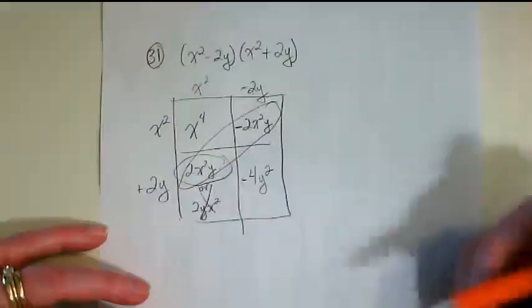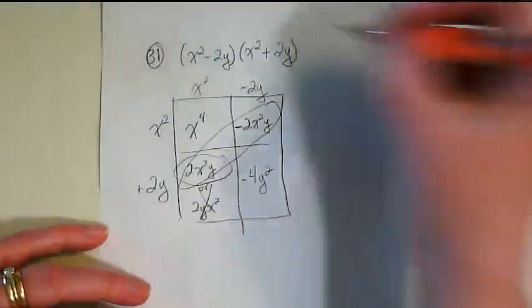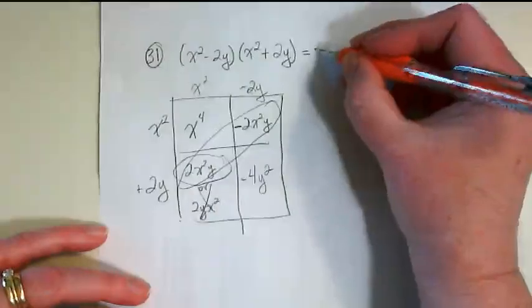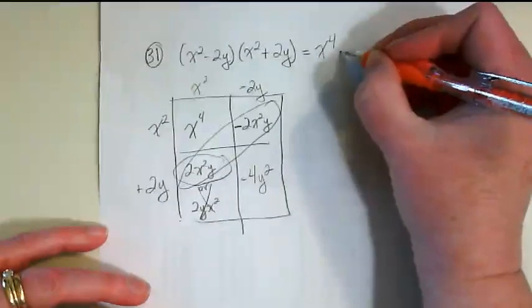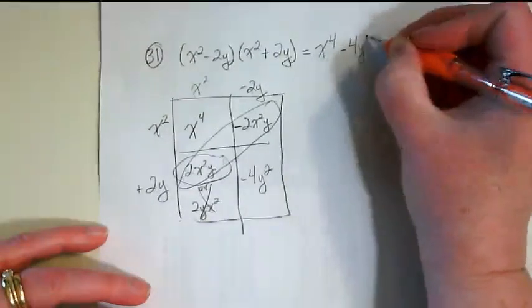These two zero each other out, so there's not going to be a middle term in this. That means the answer to this is x to the fourth power minus 4y squared.